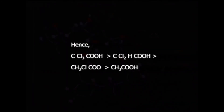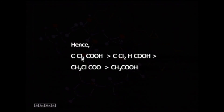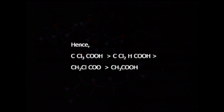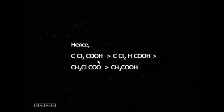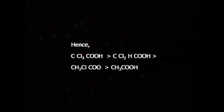For example, fluorine, chlorine, and bromine are minus-I effect groups. Substituting hydrogen atoms one by one with chlorine in acetic acid: as the number of minus-I effect groups increases, acidity increases. So trichloroacetic acid is the most acidic, followed by dichloroacetic acid, then monochloroacetic acid, and finally unsubstituted acetic acid is the least acidic.